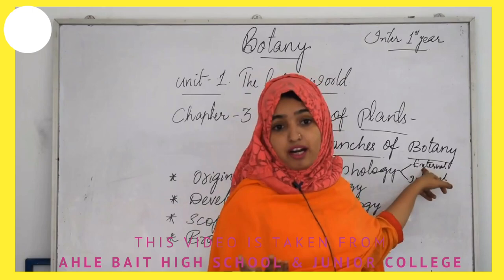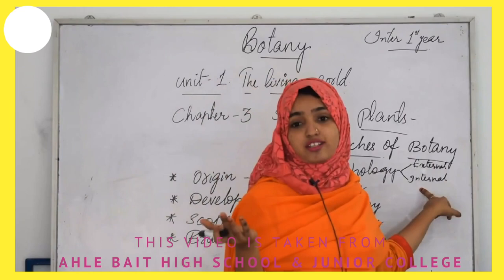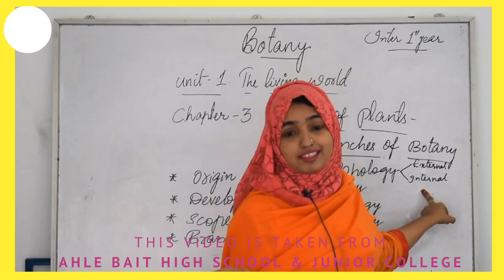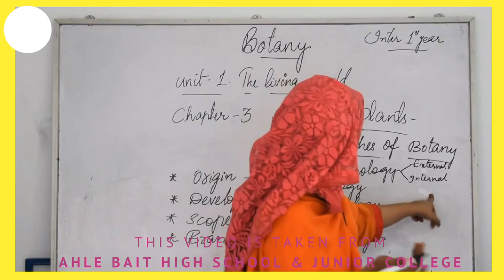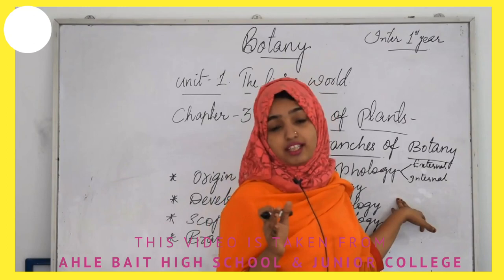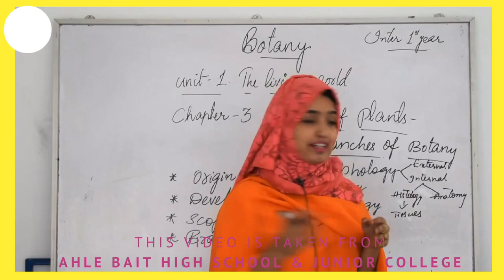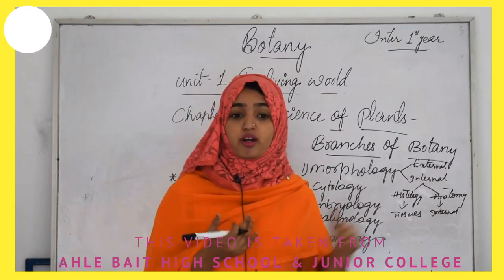External morphology is the study and description of external characters of the plant, like root, stem, flower, and fruit — organs visible from the external surface. Internal morphology is the study of the internal structure of different plant organs, such as cell structure and internal structures of stem and leaf. Internal morphology is further classified into two branches: histology — the study of different tissues in the plant body — and anatomy, which deals with the gross internal details of plant organs like root, stem, and leaf.